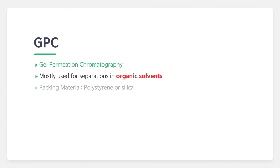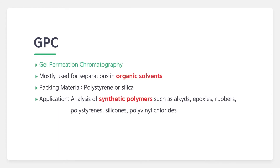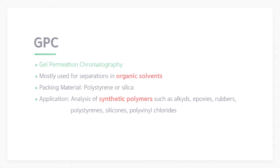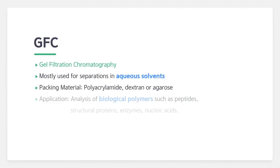GPC stands for gel permeation chromatography. It normally uses columns filled with polystyrene or silica to analyze synthetic polymers such as alkyds, epoxies, rubbers, polystyrenes, silicones, and polyvinyl chlorides. GFC, gel filtration chromatography, generally uses columns packed with polyacrylamide, dextran, or agarose to analyze biological polymers such as peptides, structural proteins, enzymes, and nucleic acids.